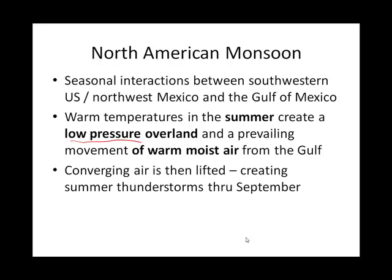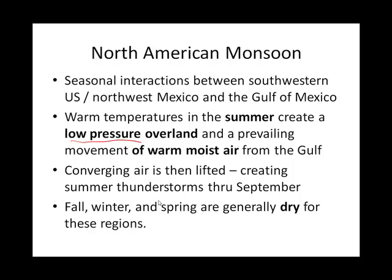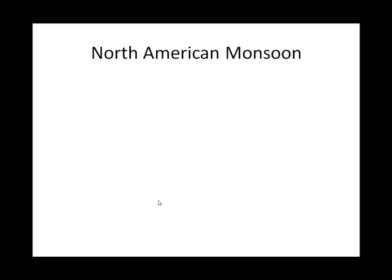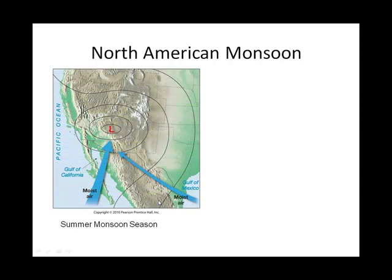That warm, moist air comes in from the Gulf and is lifted up where the Rockies peter out. With that lifting mechanism in place, they get a lot of thunderstorms and precipitation through September. Then when September ends, they have a dry season. Sometimes storm chasers will go out in this area seasonally to chase storms.